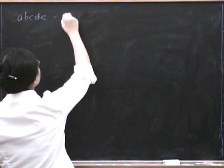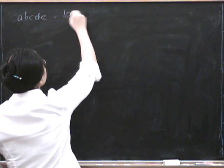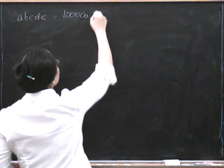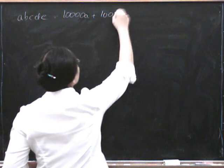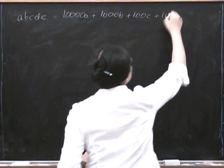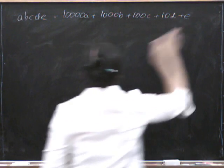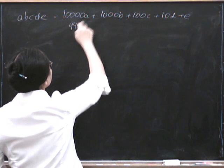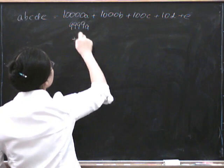What we did was we said that that equals actually 10,000A plus 1,000B plus 100C plus 10D plus E, which we then split up as 9999A plus A, 999B plus B...